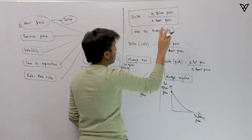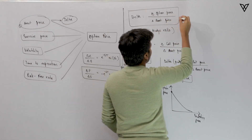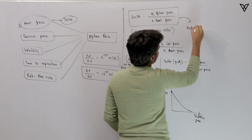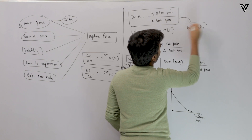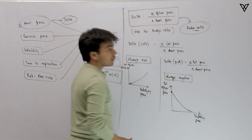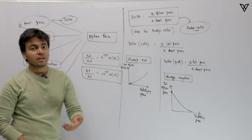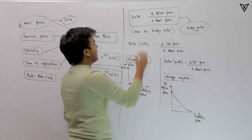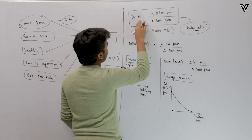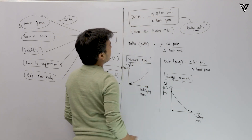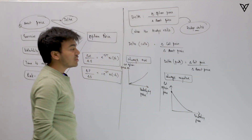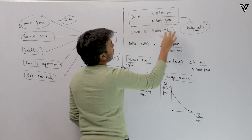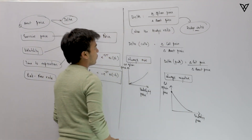We have already done a question on this. Delta is nothing but your hedge ratio as well — we did a question on hedge ratio while trying to figure out the arbitrage profit that we can make given that the option is underpriced or overpriced. So delta is your hedge ratio, and you calculate it by dividing the change in option price by the change in asset price.